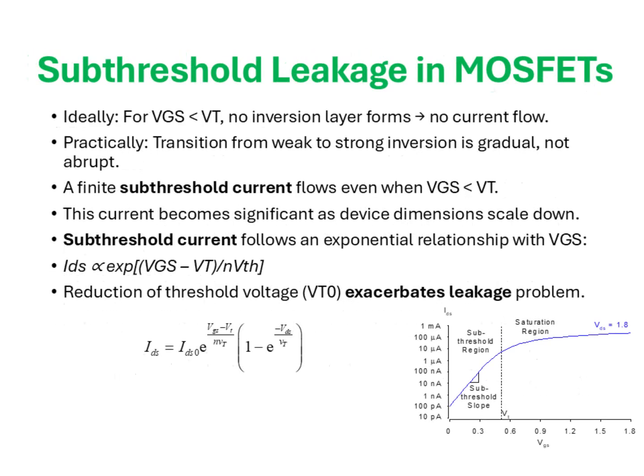Another important short channel effect that severely impacts low power operation is sub-threshold leakage. In the ideal case, when the gate-to-source voltage VGS is less than the threshold voltage VT, the MOSFET is supposed to be completely turned off — no inversion layer should form and there should be no conduction. However, in practice, this behavior is not perfectly abrupt. Instead of a sharp transition from off to on, the inversion process happens gradually, creating what we call the weak inversion region. As a result, even when VGS is below VT, a finite drain current still flows, referred to as the sub-threshold current or sub-threshold leakage.